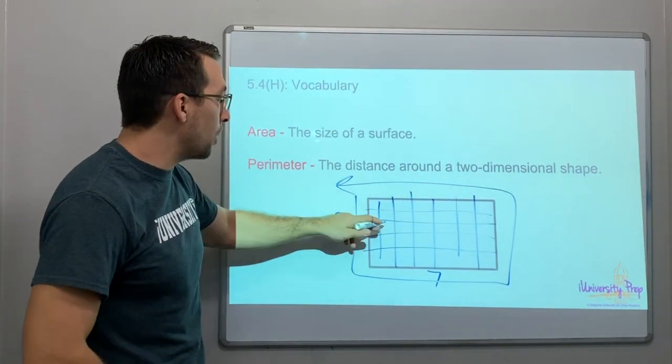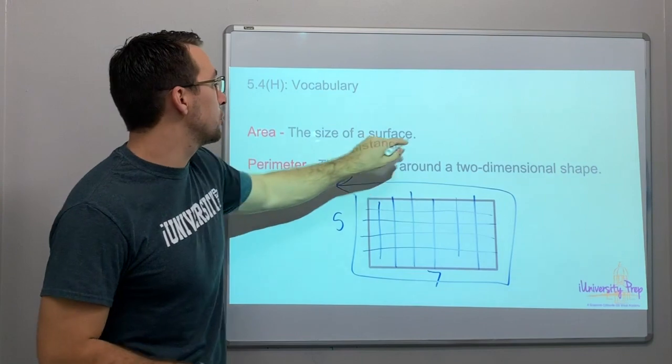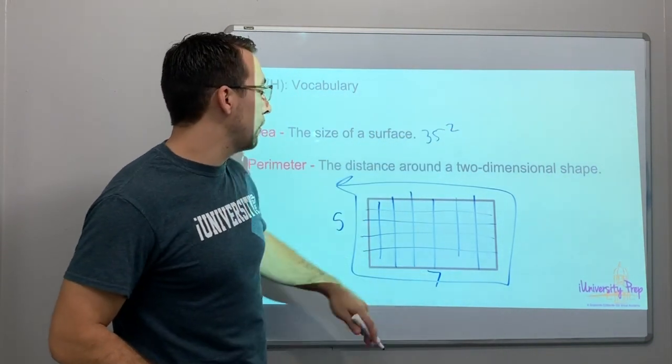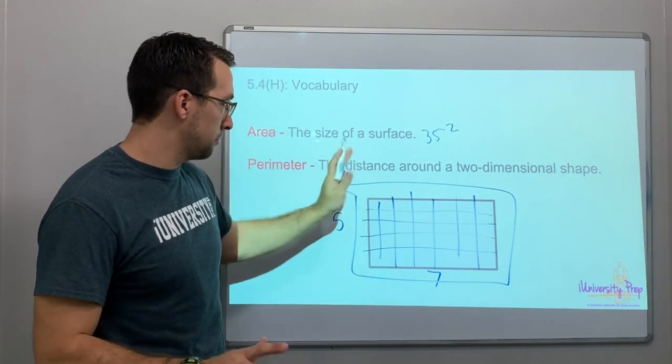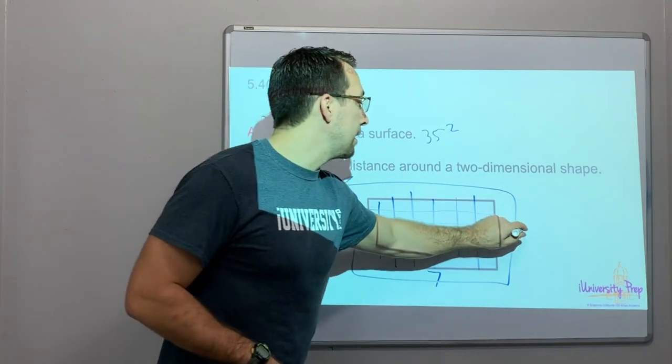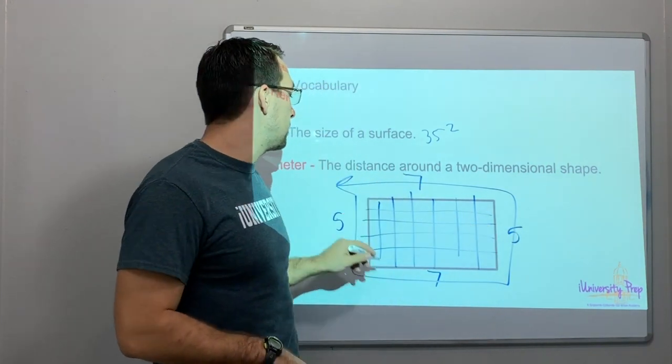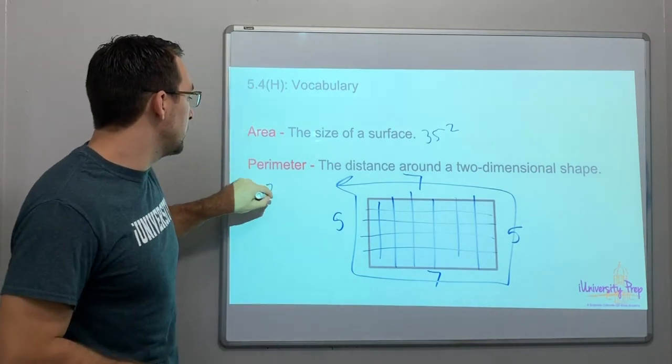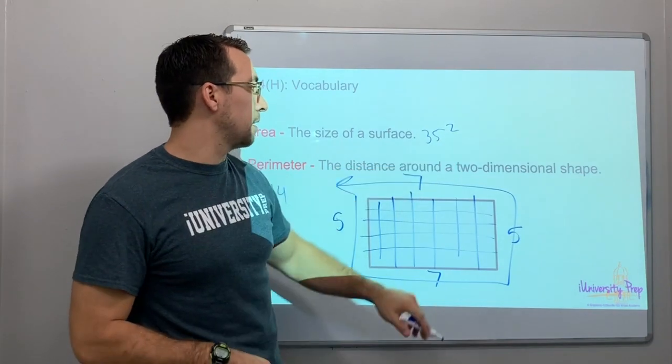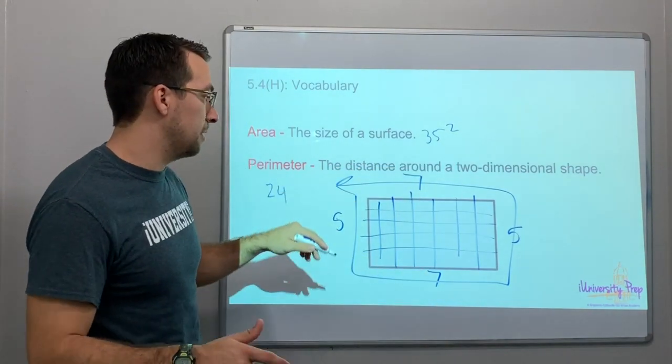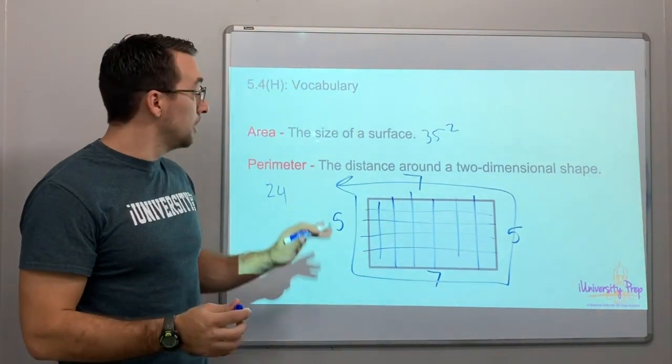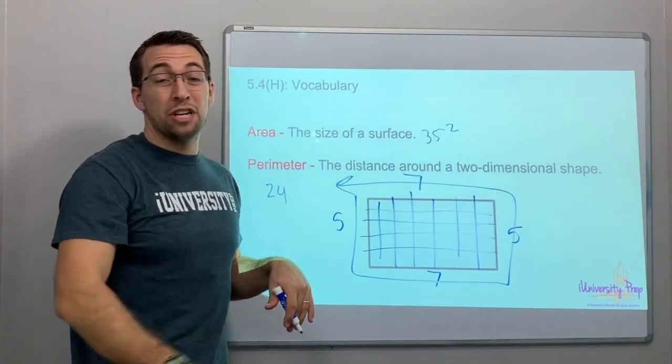In this example, area is 35 square units and the perimeter is 5 plus 7 is 12, and this side is 5 and this side is 7, so 12 plus 12 is 24. We'll say this is 35 feet squared and the perimeter is 24 feet. Area is the space the object covers, perimeter is the distance around the object.